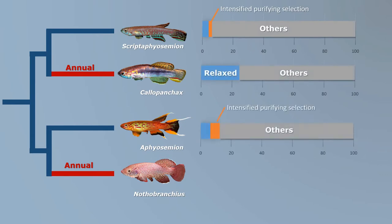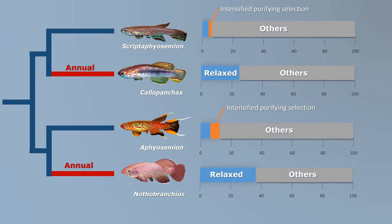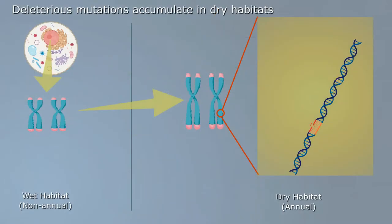Even within species, populations from dry habitats have larger genomes than those from wet climates. Compared to closely related species that live in permanent water, many more genes in the annual killifish accumulated deleterious mutations. Also within Nothobranchius species, populations from drier environments accumulated more deleterious mutations at otherwise highly conserved genes.